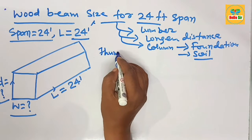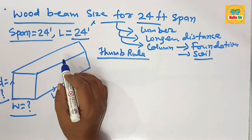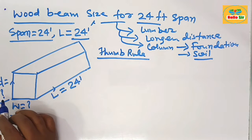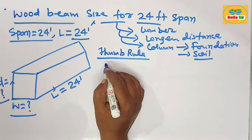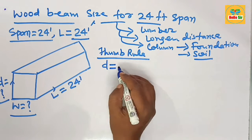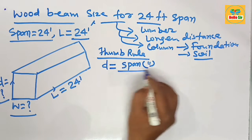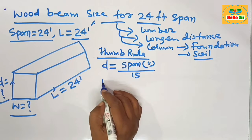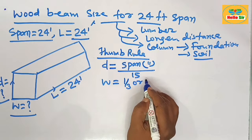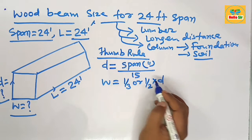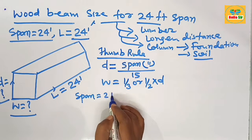We calculate wood beam size for a 24-foot span based on thumb rules. For sizing a wood beam, the depth of the wood beam equals the span in inches divided by 15. The width section of the wood beam equals one-third to one-half of the depth section of the beam. The span length is 24 feet.